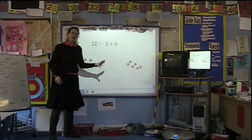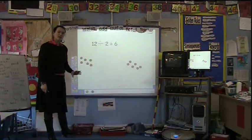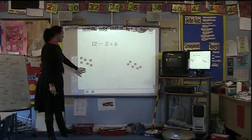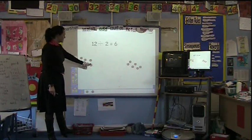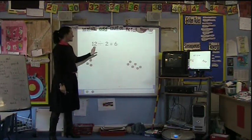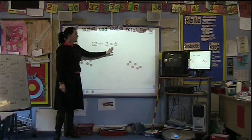Once the objects have been divided into two sets, the children then are encouraged to count how many in a set: one, two, three, four, five, six. So the children can say 12 divided by 2 equals 6.